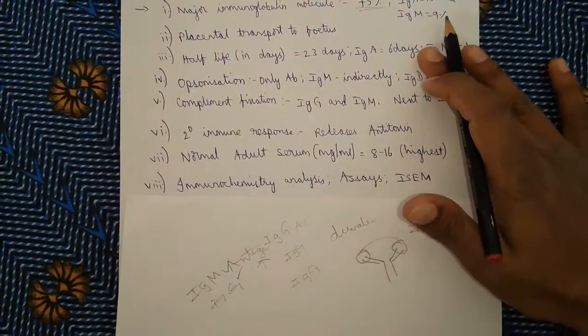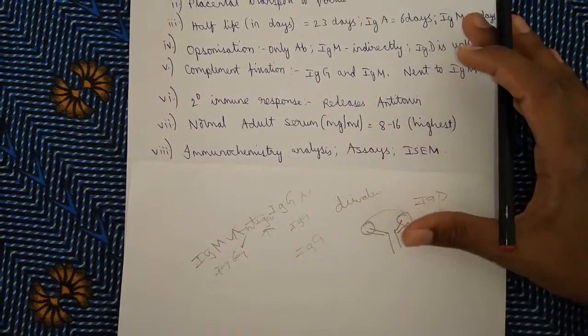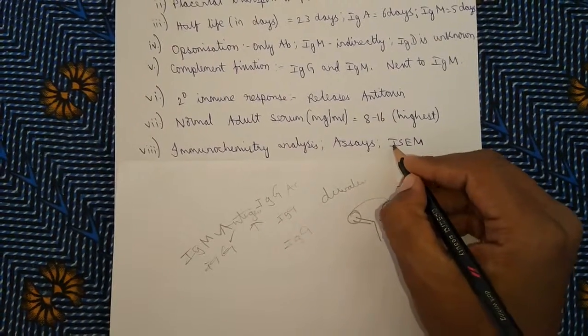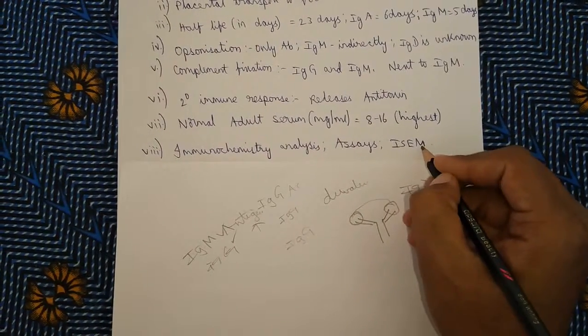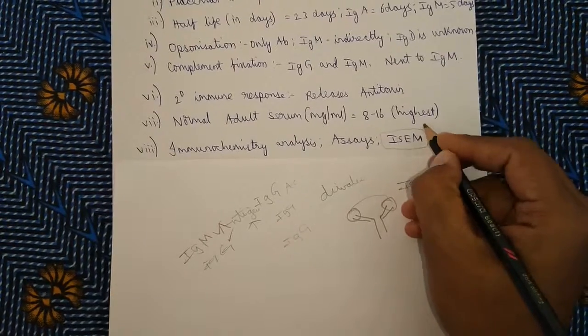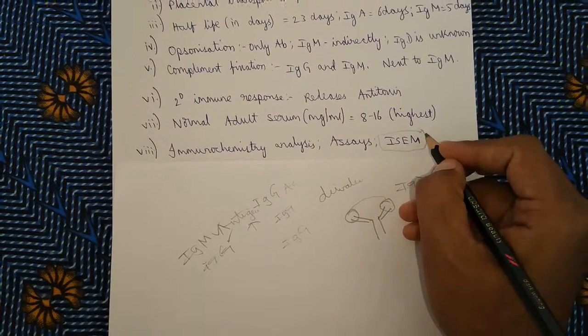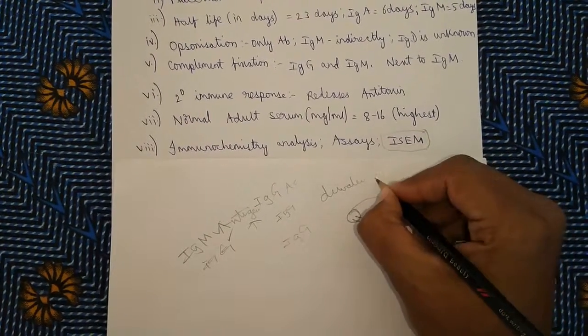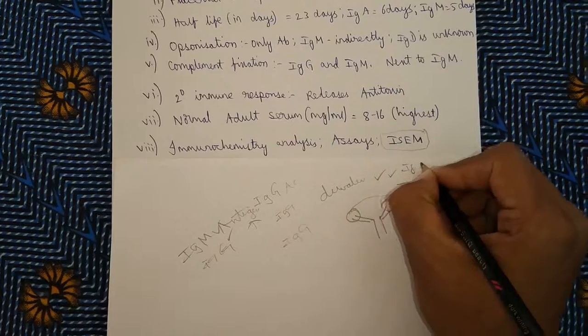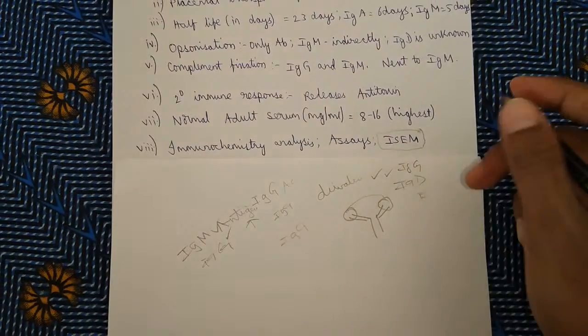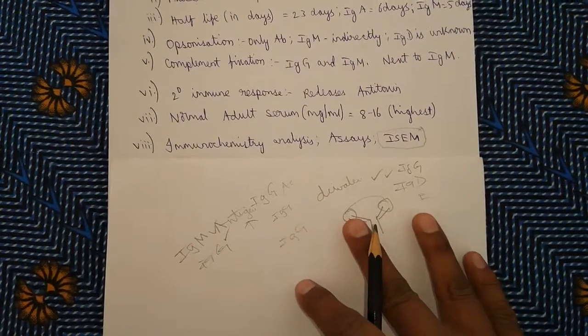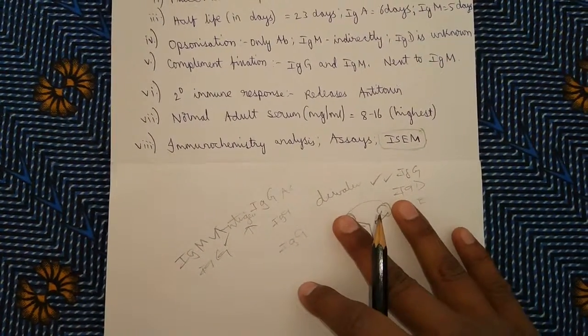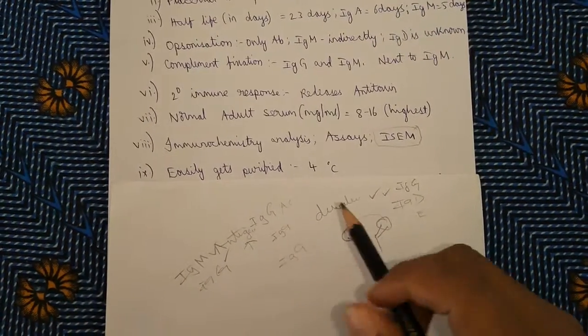ISEM is a diagnostic technique which is called as immunosorbent electron microscopy. In this technique, the viruses are observed under the microscope and studied. The virus properties are studied under the microscope. In this context, IgG molecule is widely used in the diagnostic tools like immunochemistry analysis. No other immunoglobulin gets cooperated in the analysis techniques.